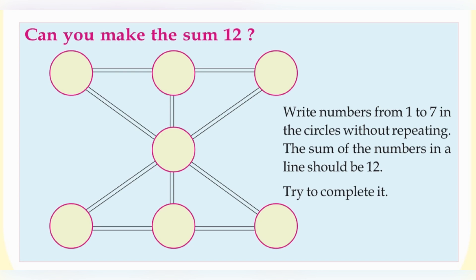Here are 7 circles. You can write the numbers from 1 to 7, but with one condition: don't repeat the numbers. And another condition: in each line — the first line, the central line, and the last line — the sum should be 12. That means the answer is 12. How can we complete this puzzle?